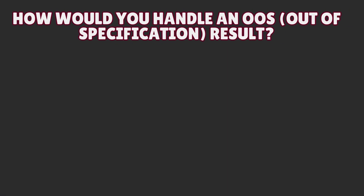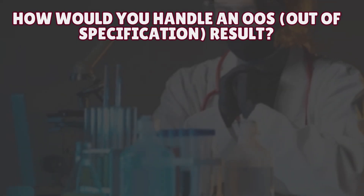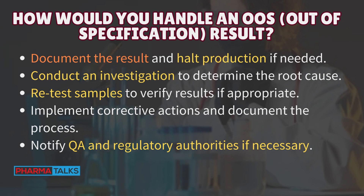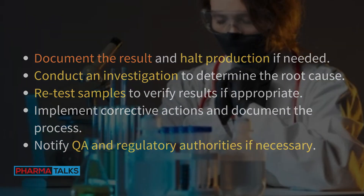How would you handle an OOS (out-of-specification) result? Document the result and halt production if needed. Conduct an investigation to determine the root cause. Retest samples to verify results if appropriate. Implement corrective actions and document the process. Notify QA and regulatory authorities if necessary.